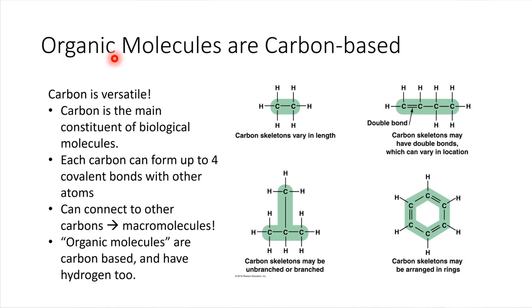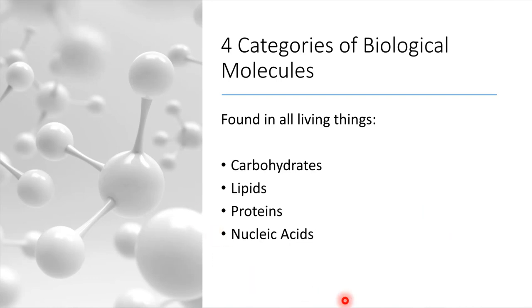So getting into where we're headed for this module, we've got four different types of biological molecules, I mentioned that already earlier. What we're gonna do is walk through each of these, one at a time. All of these are examples of organic molecules, so they're all built using carbon, and they all have hydrogen as well. All of these are different.